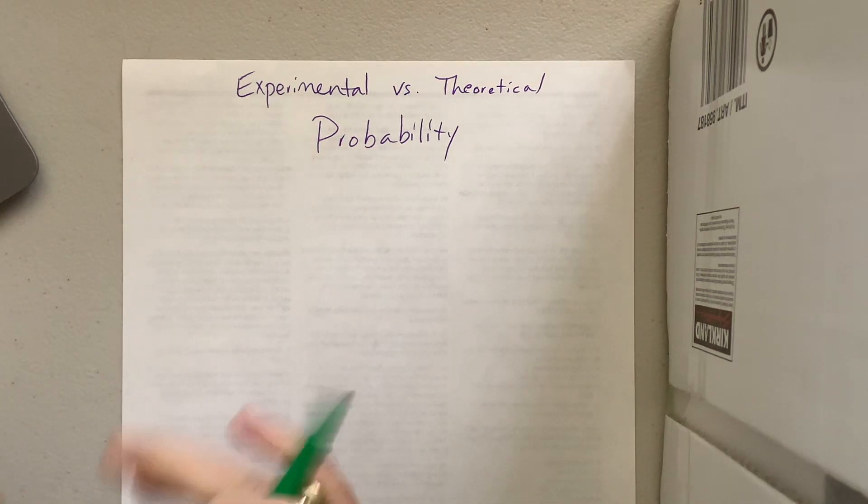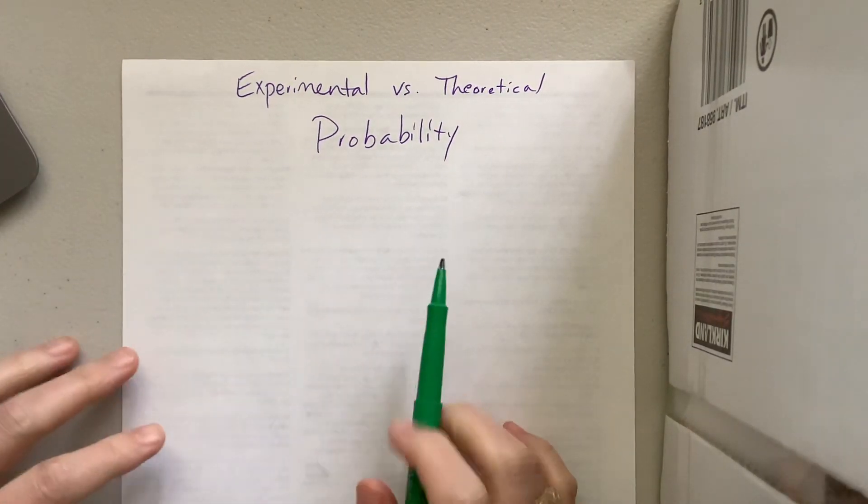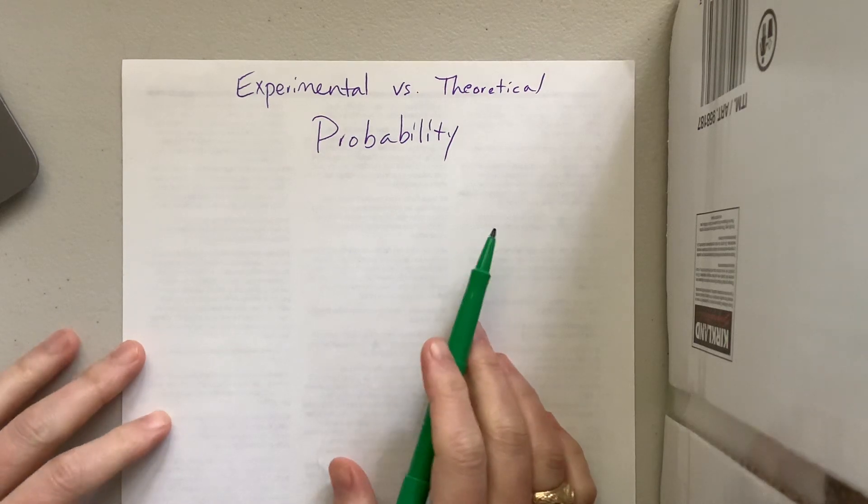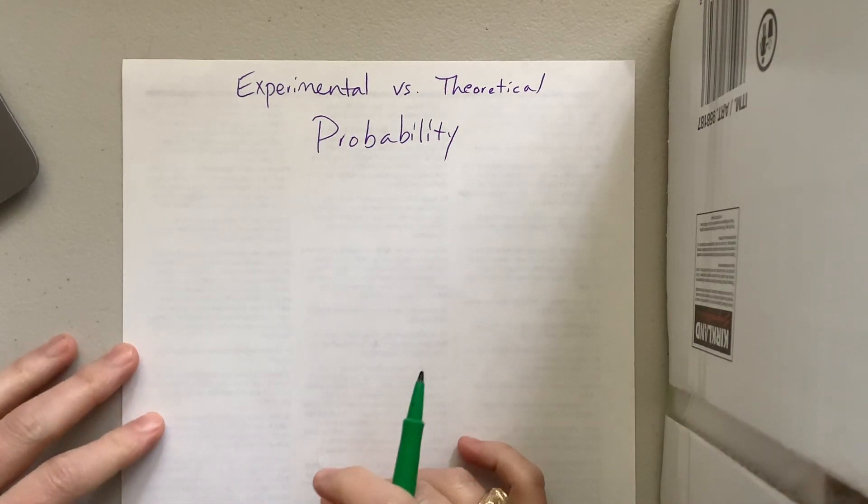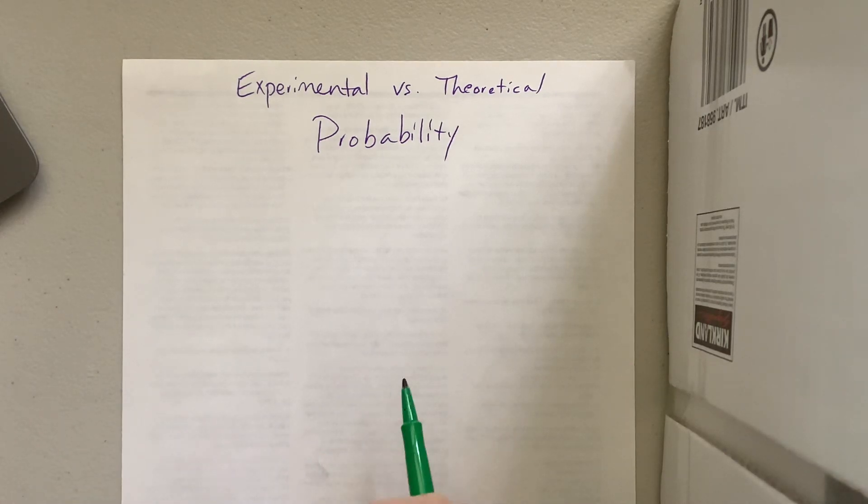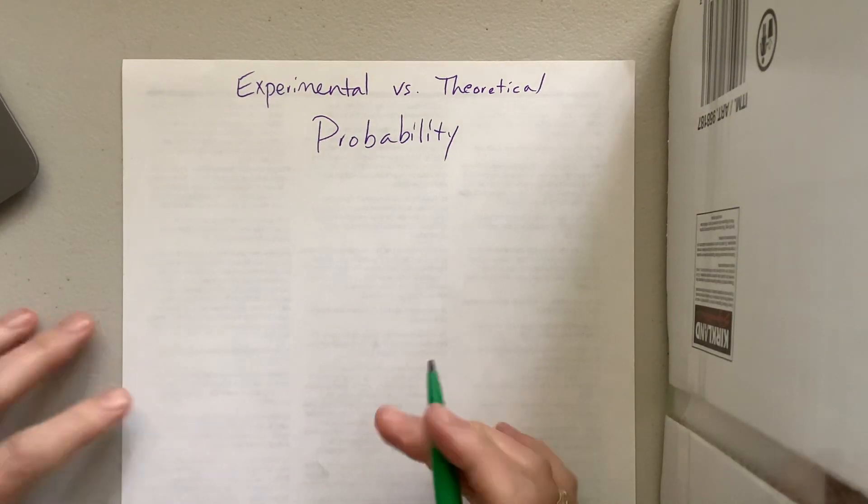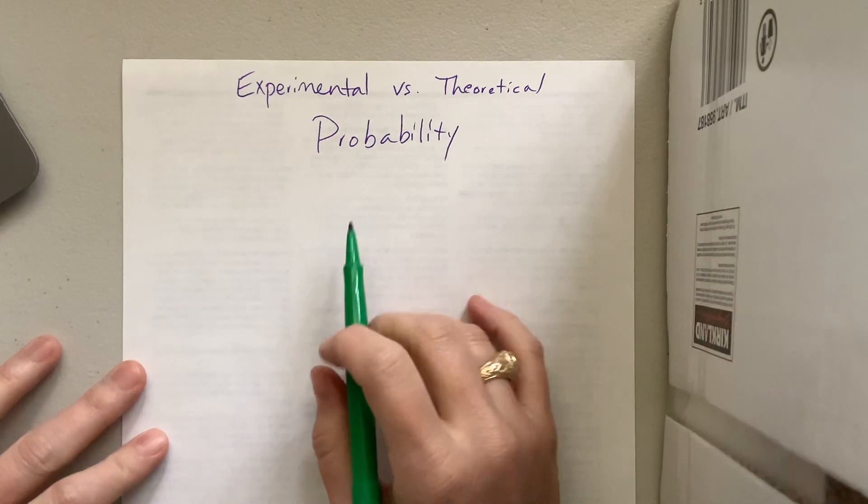Okay, as we get started in the chapter on probability for IAB math, we want to first discuss the idea of experimental versus theoretical probability.